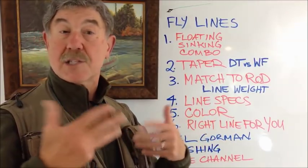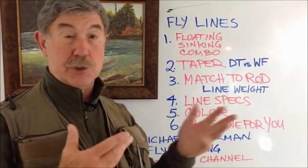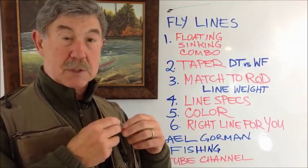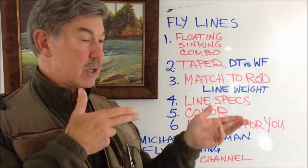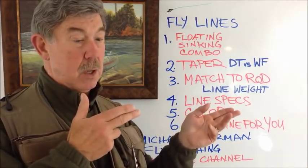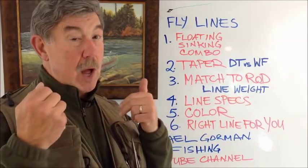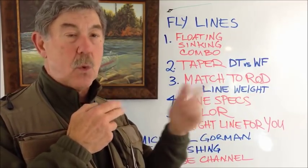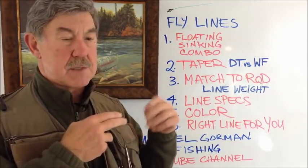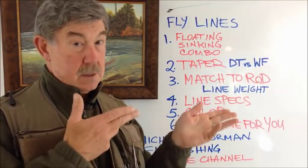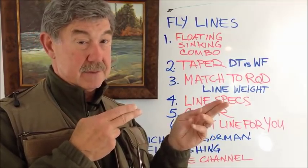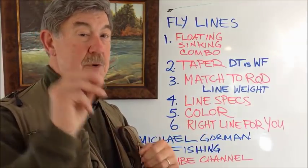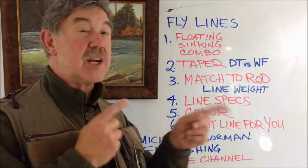A third advantage of the double tapered line is economy — it's tapered at both ends. Fly lines, like your socks and shoes, will eventually wear out. When the coating cracks on a floating double taper, you can pull the line off the reel, turn it around, and you've got a brand new taper that hasn't been exposed to the elements or been stepped on. That's a nice thing to have.